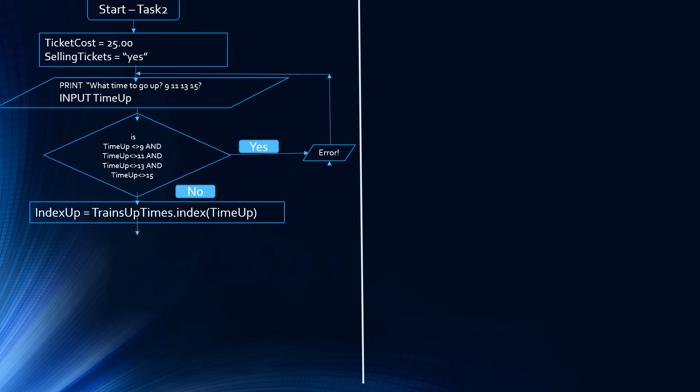If this is yes, we have an error message, and after that error message we again print what time do you want to go up — 9, 11, 13, 15 — input the time up, and validate again. Now let's say they did put time up equal to 9. So we're going to set index up equal to trains up times dot index of time up. That's a quick way to get index up.